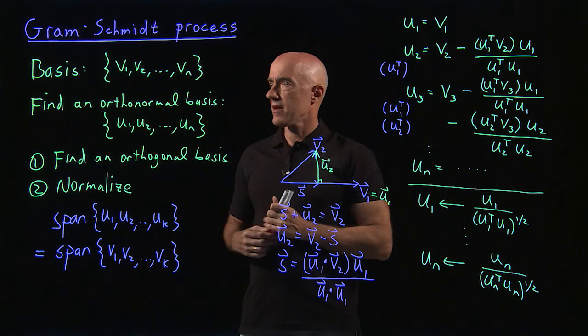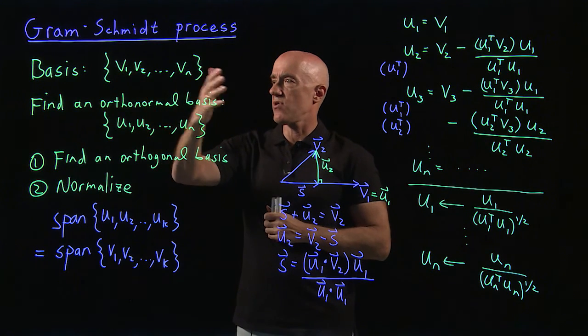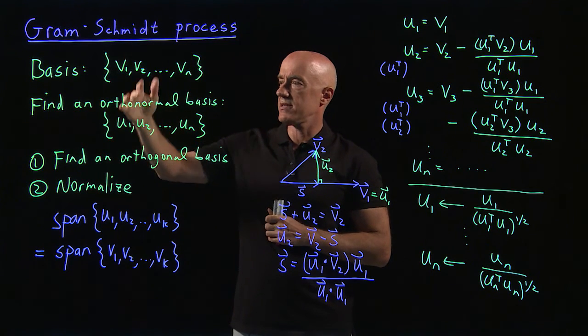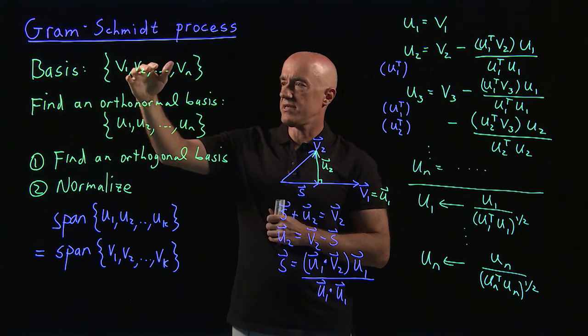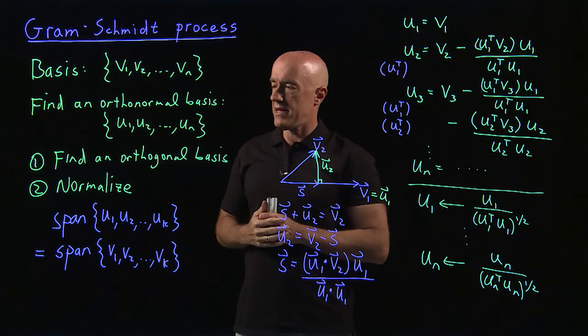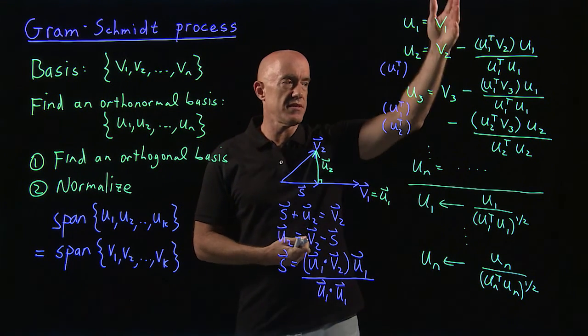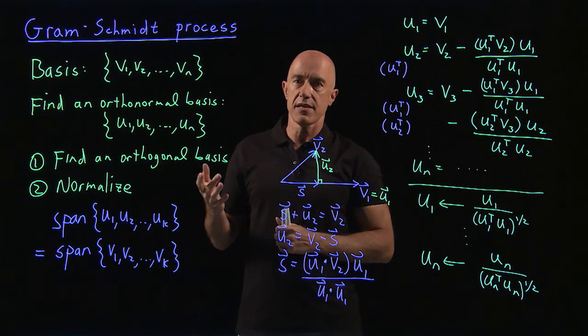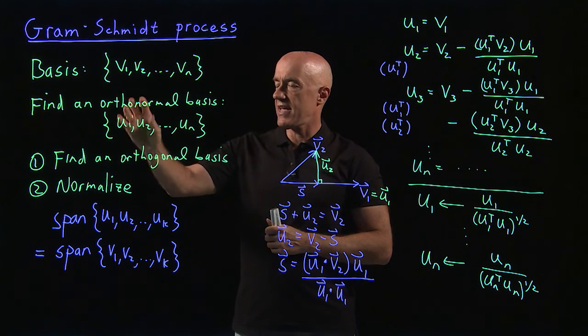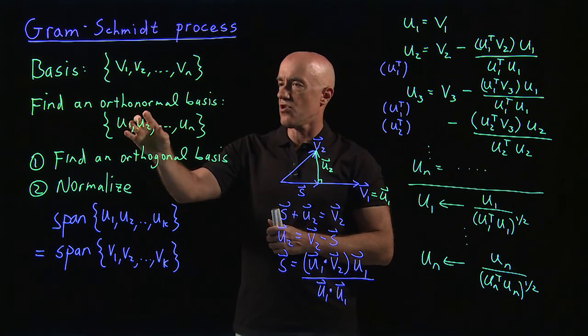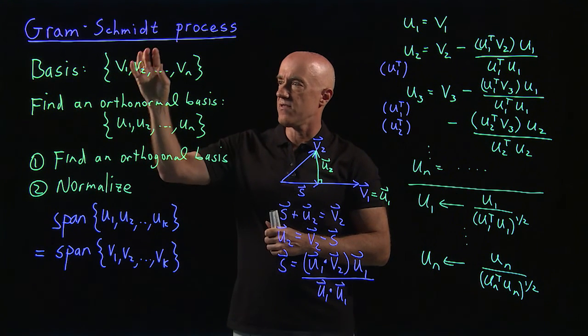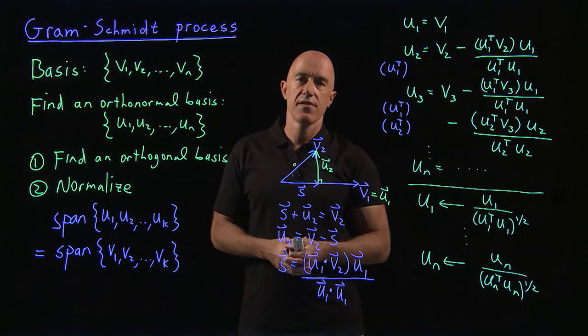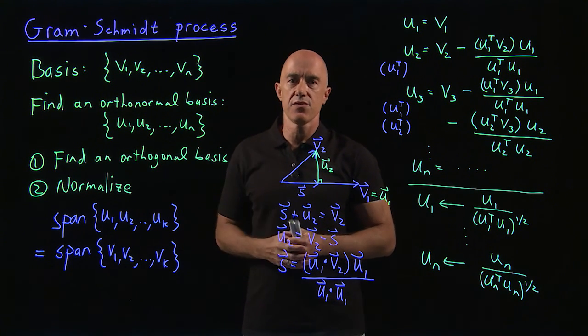So let me recap. You're given an ordinary set of basis vectors. The Gram-Schmidt process lets you construct from that ordinary set an orthonormal basis. And this is the algorithm to do that. Furthermore, the Gram-Schmidt process is such that the span of the first k vectors in this orthonormal set is the same as the span of the first original k vectors. I'm Jeff Chasnoff. Thanks for watching, and I'll see you in the next video.